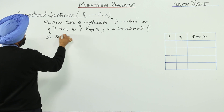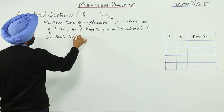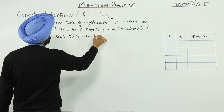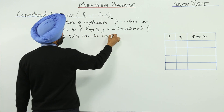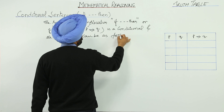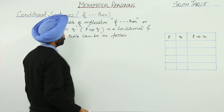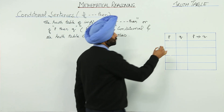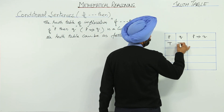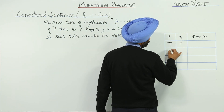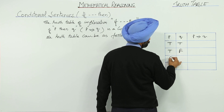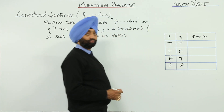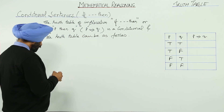And the truth table can be as follows. Now, we already know that for two sentences P and Q, the combinations are: both true, true-false, false-true, and false-false.